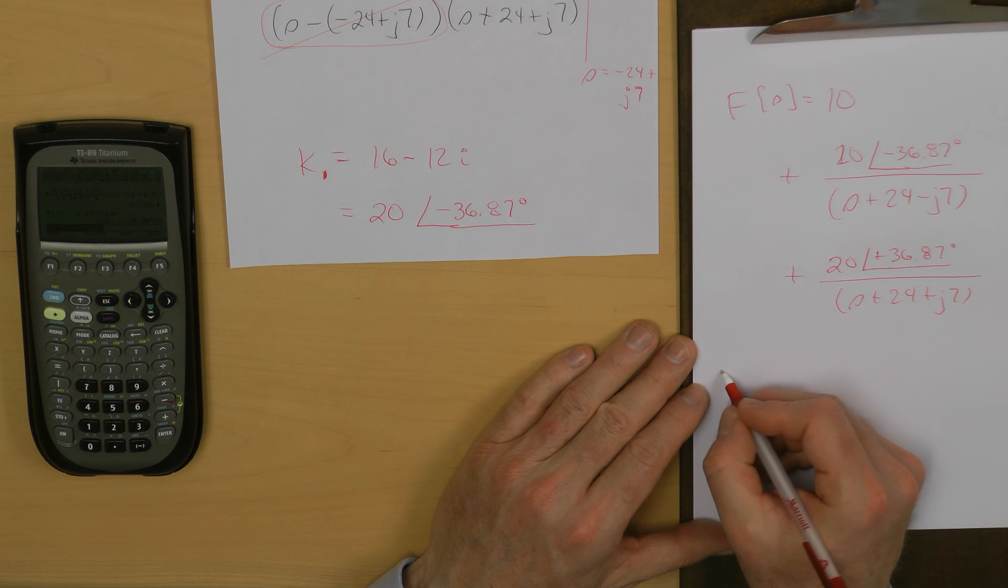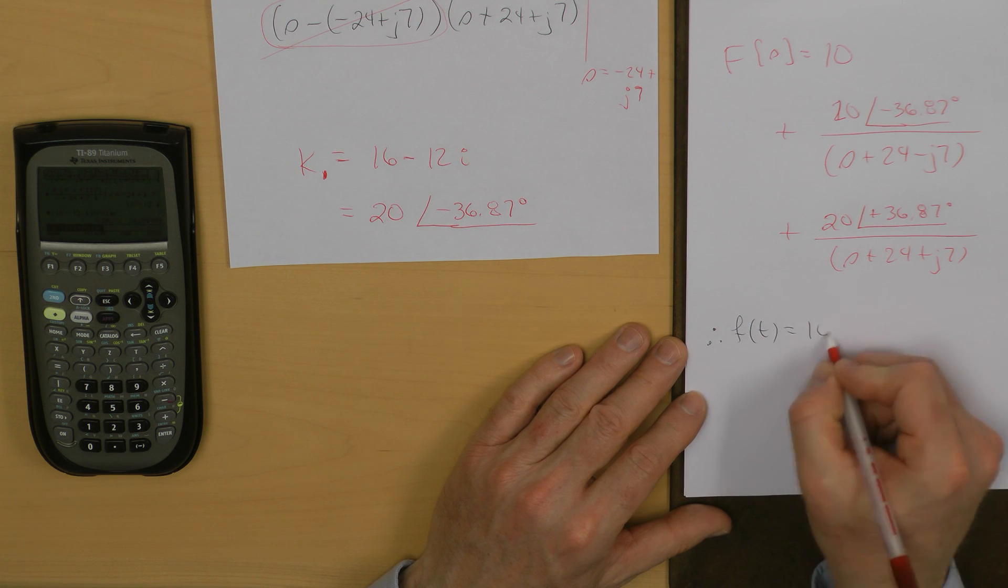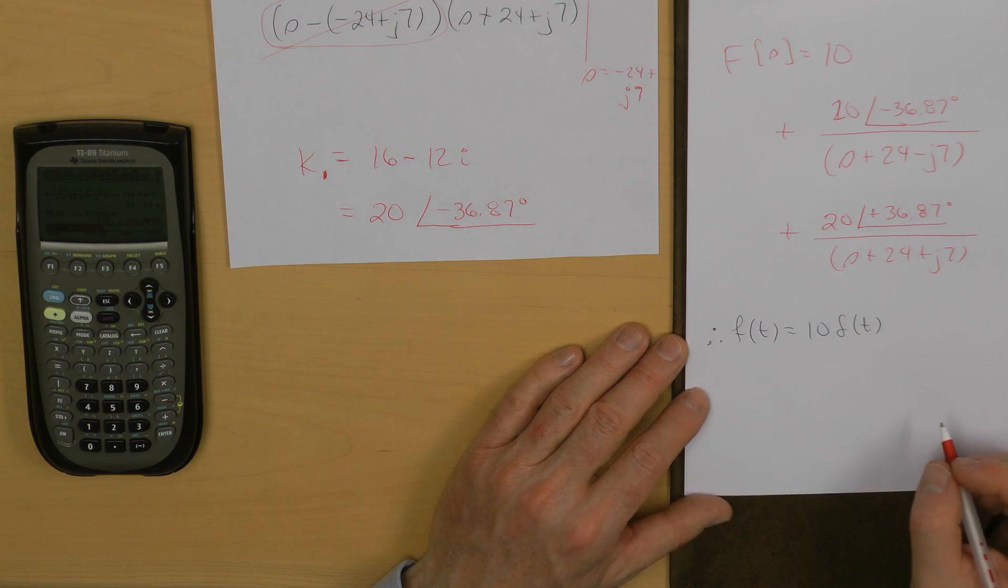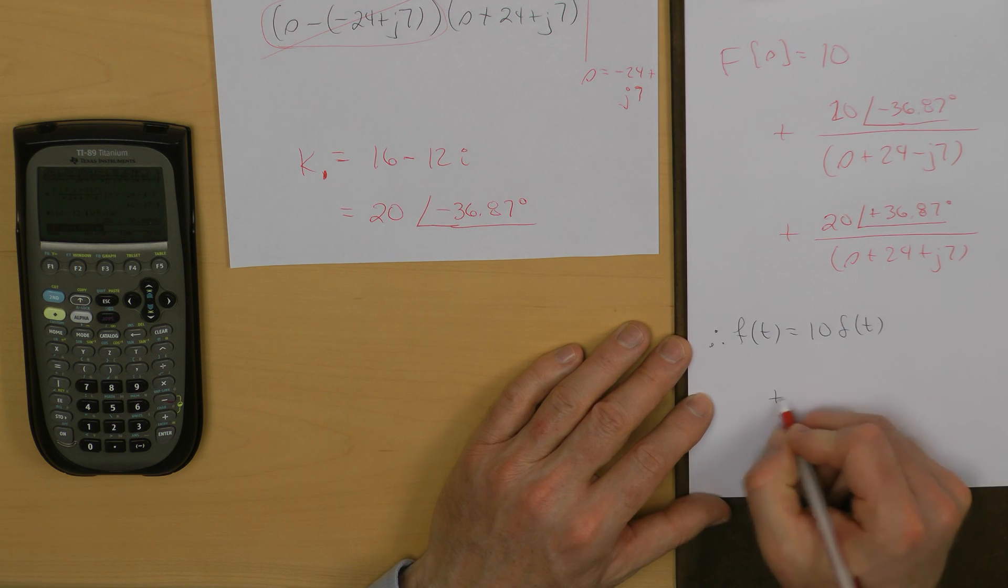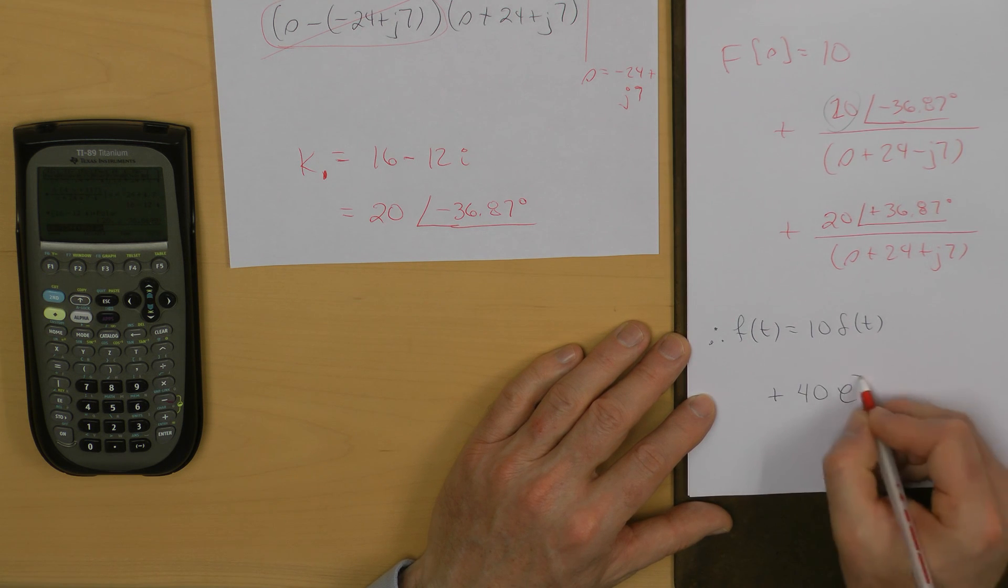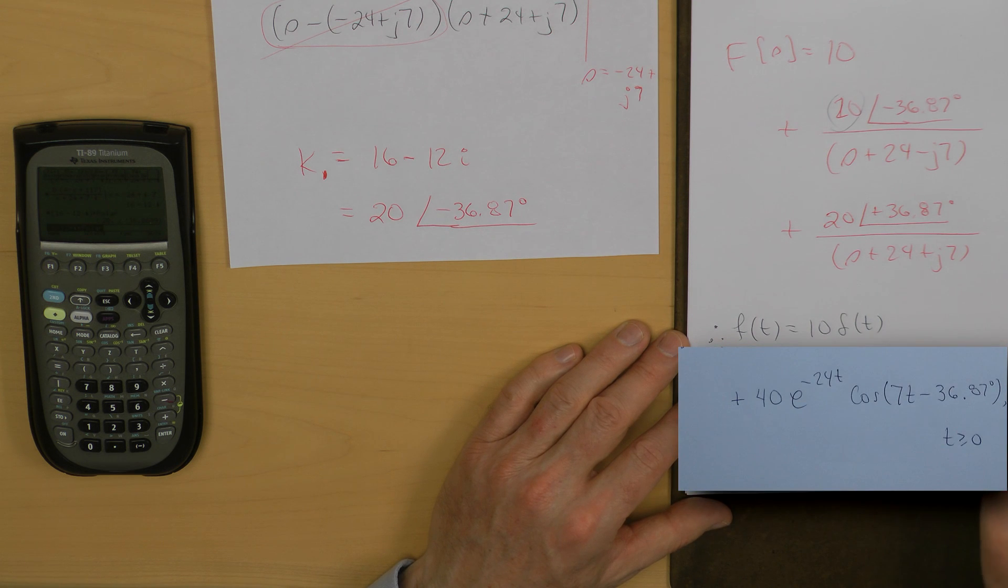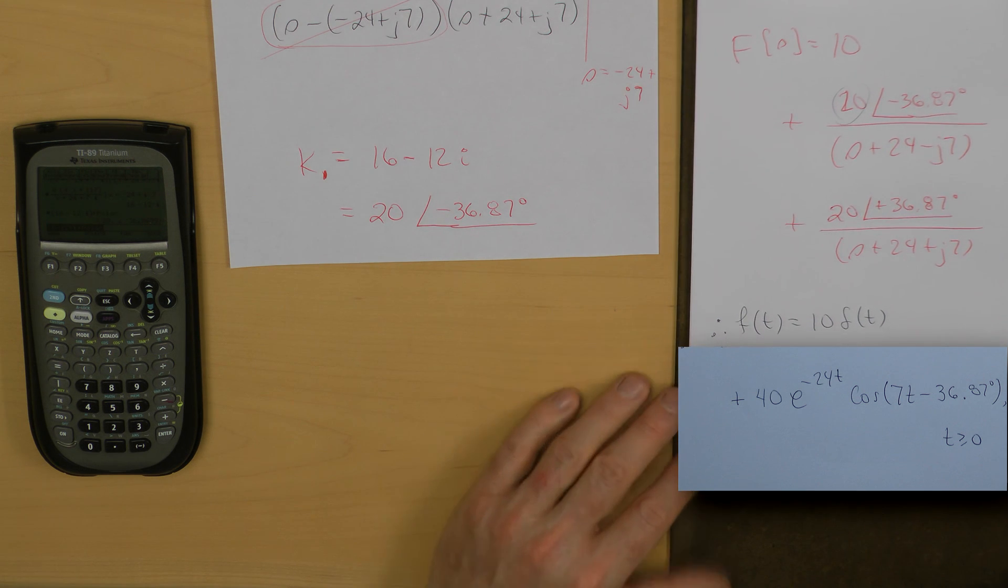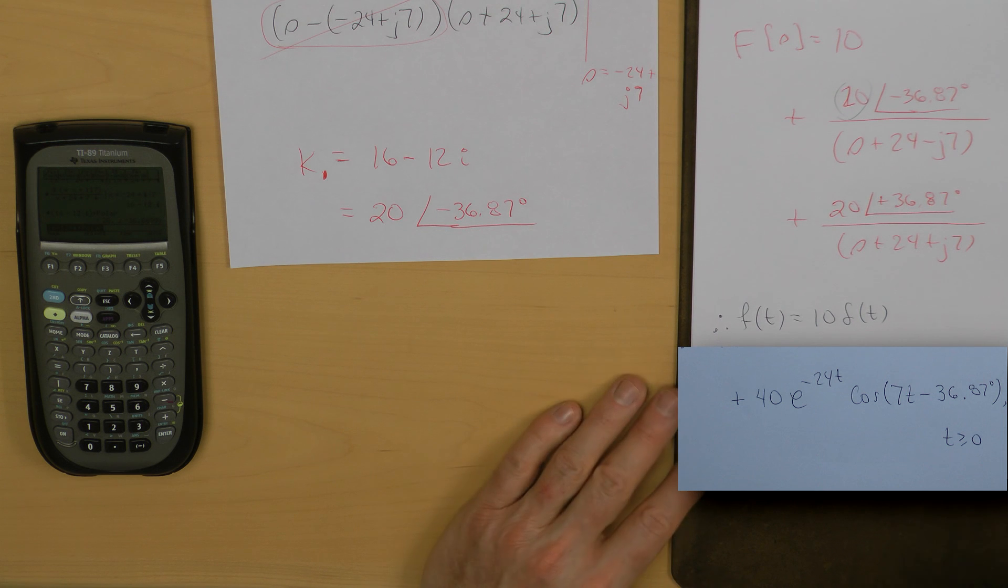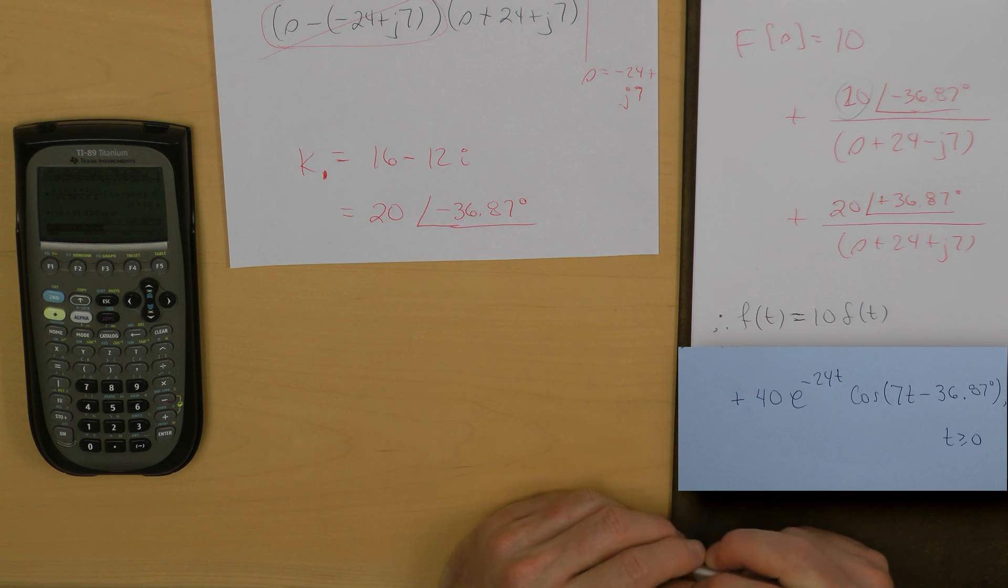I can now write down the time domain expression for little f of t. That's 10 times the impulse or an impulse with a weight of 10. And now I need to simply double this magnitude, so I now have plus 40. The e is going to be e to the minus 24t cosine. The damped frequency is 7, and my angle is minus 36.87 degrees. That expression is true for t greater than or equal to 0. Hopefully that now shows you how quickly you can use the calculator to do some of these complex algebra manipulations.